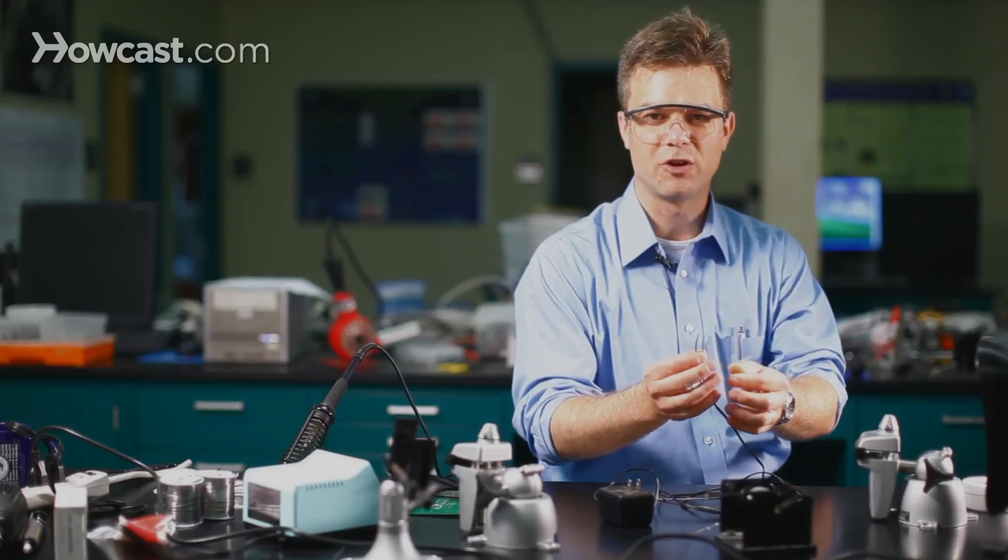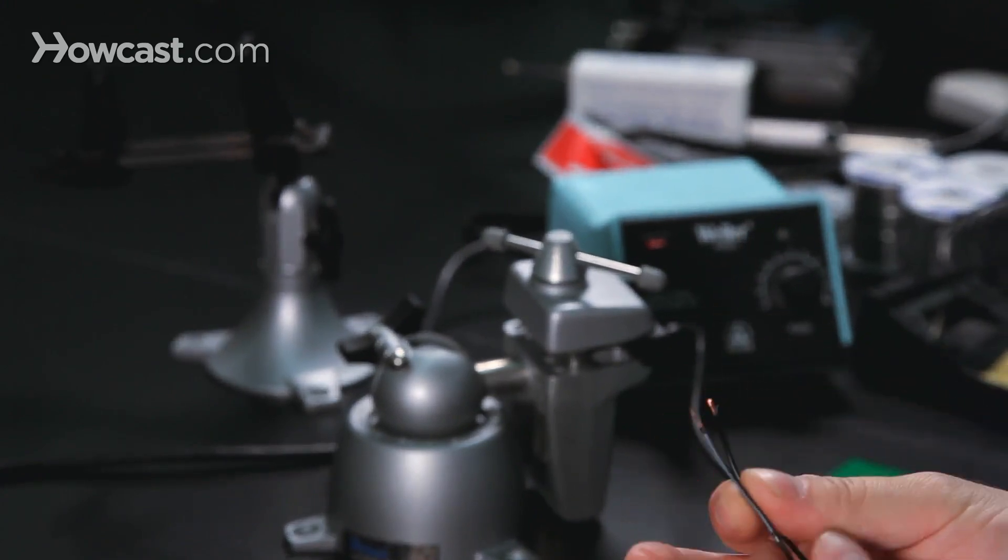The copper that's been exposed to air for a long time forms an oxide layer on its surface, and that oxide layer tends to disrupt the alloying process of soldering. So it's important to get rid of that oxide layer before you begin soldering.